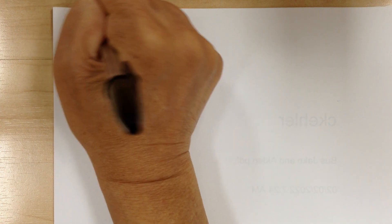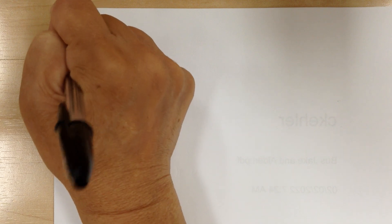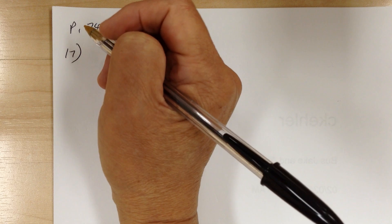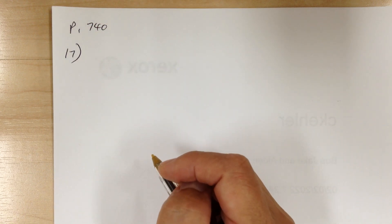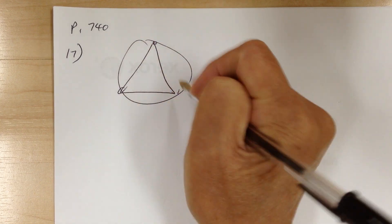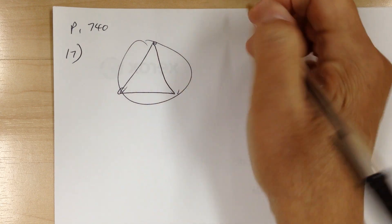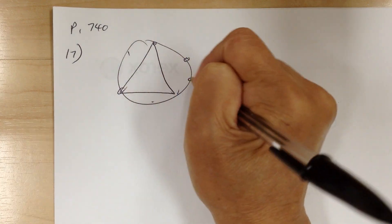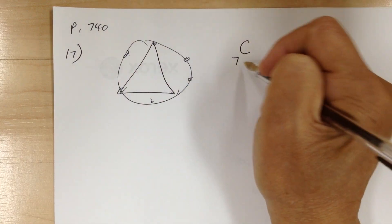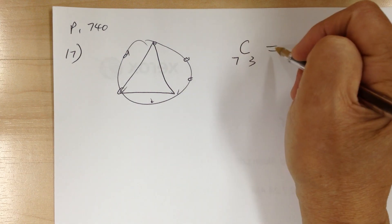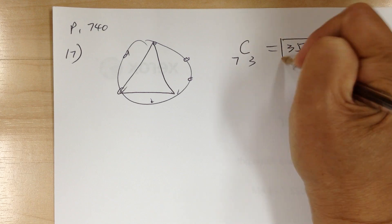Let's go to page 740 and start with number 17. You have a circle with seven points on the circle, and you want to find how many triangles you can make. It takes three points to make a triangle, and you have seven points on the circle. So you choose any three to make a triangle — 7C3 gives you 35.